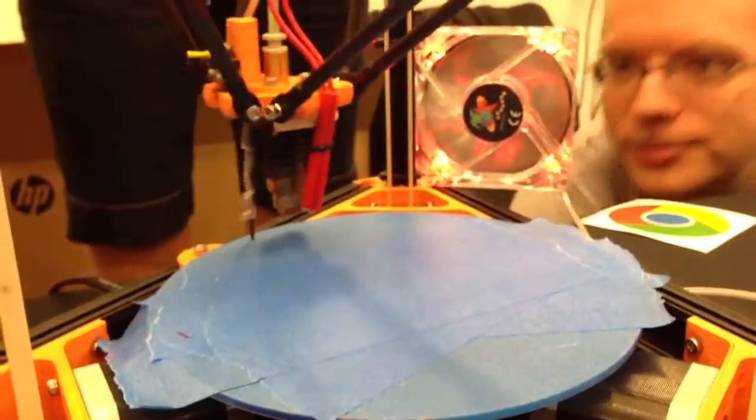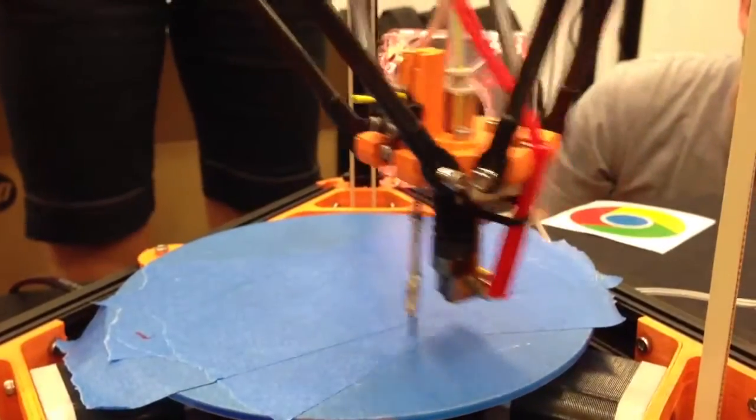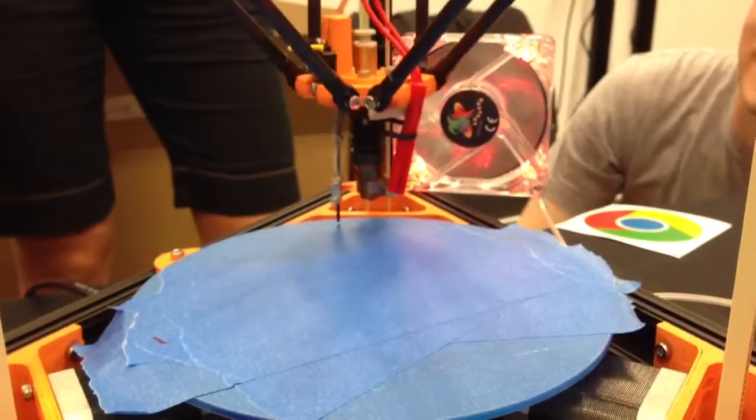It deploys the probe automatically and then looks for the print surface. Then it does a 7x7 point sampling.